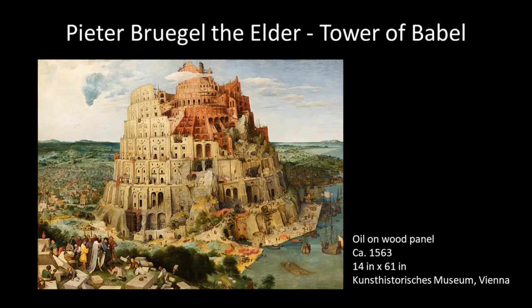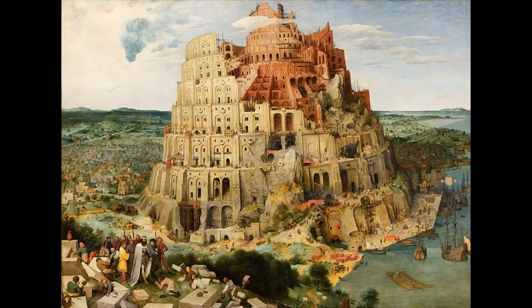Peter Bruegel the Elder: Tower of Babel. The Tower of Babel is a story from the Old Testament in which mankind wants to build a tower to heaven. God confuses the people by giving them different languages so that the tower cannot be built.